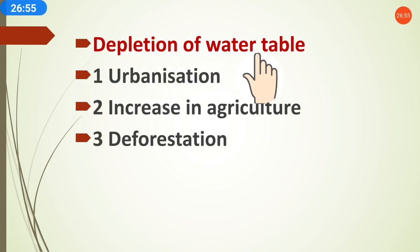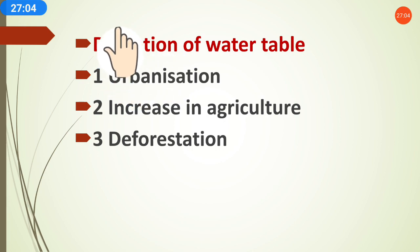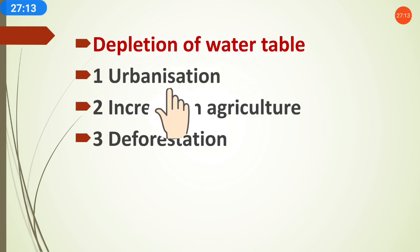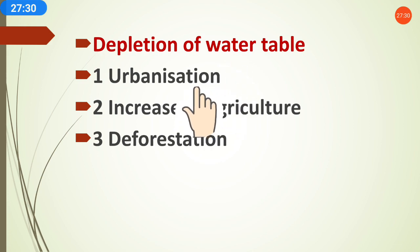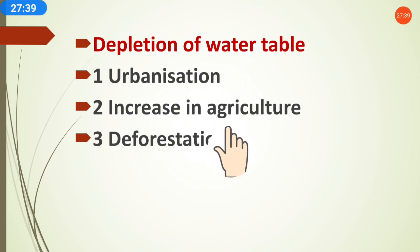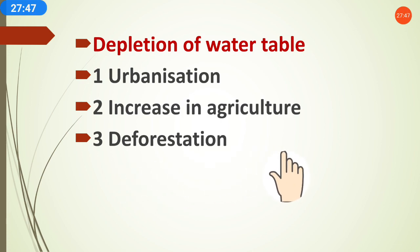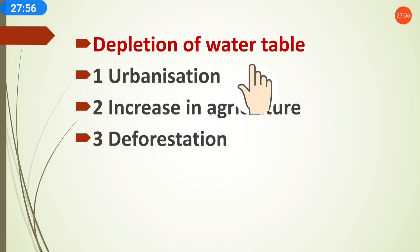The next topic is depletion of water table. Depletion means when the level of the water table is getting lower. Why is the water table getting depleted? Because of urbanization — increasing industries, construction work, and buildings require large quantities of water. Also, increase in agriculture: as the population increases, agriculture also increases, using more water. Deforestation — cutting of forests and trees — also causes the water table to decrease. Due to all these reasons the water table gets low, meaning depletion.